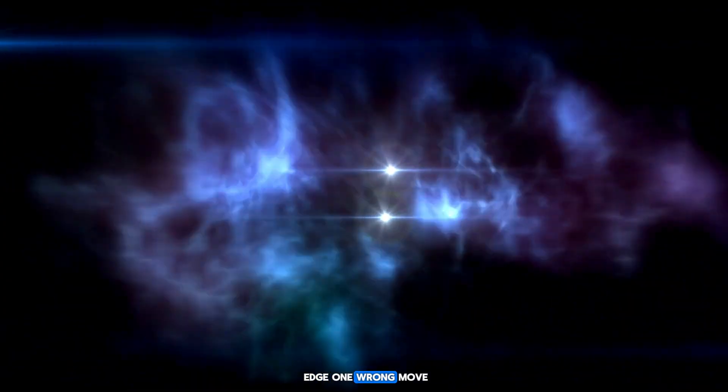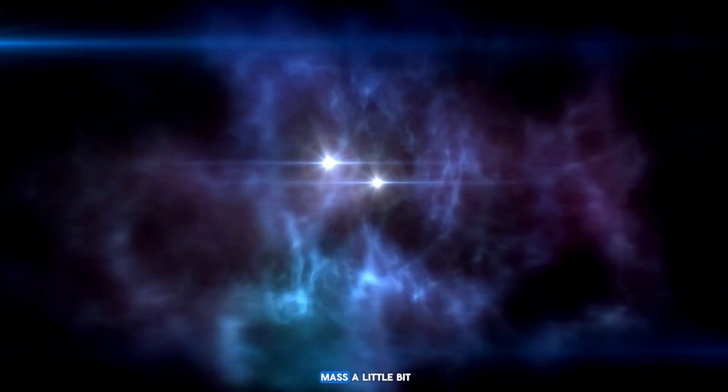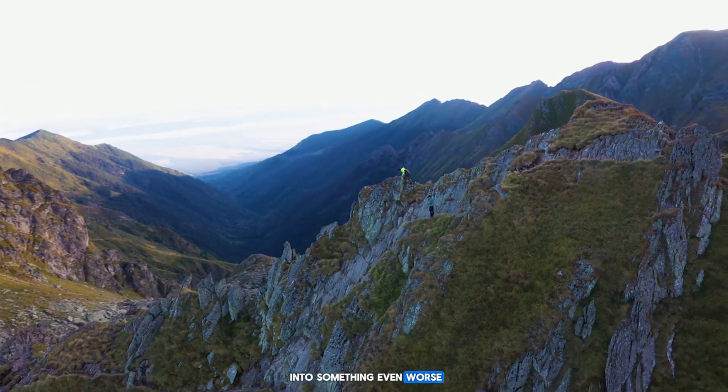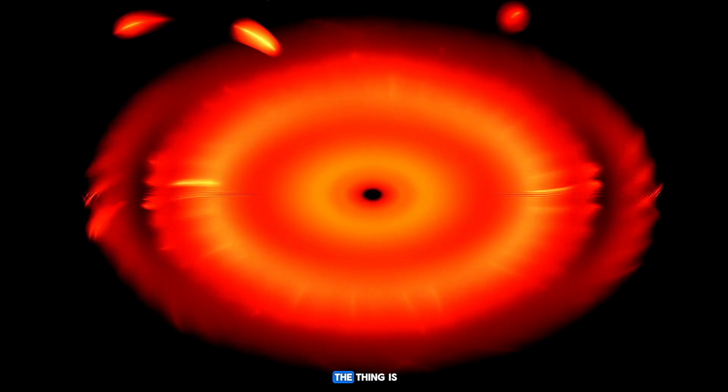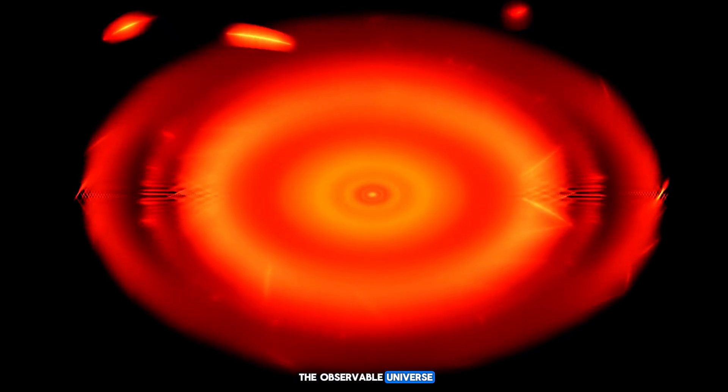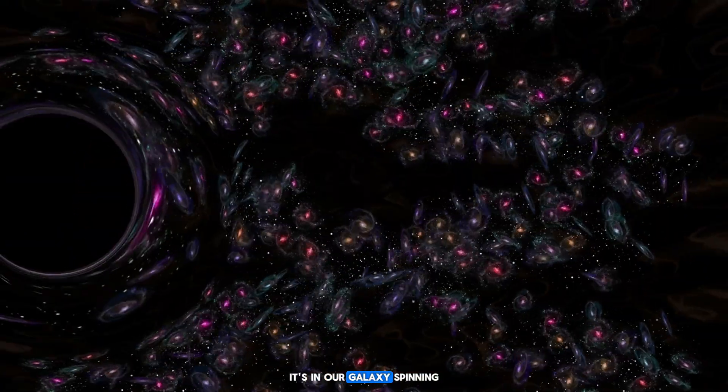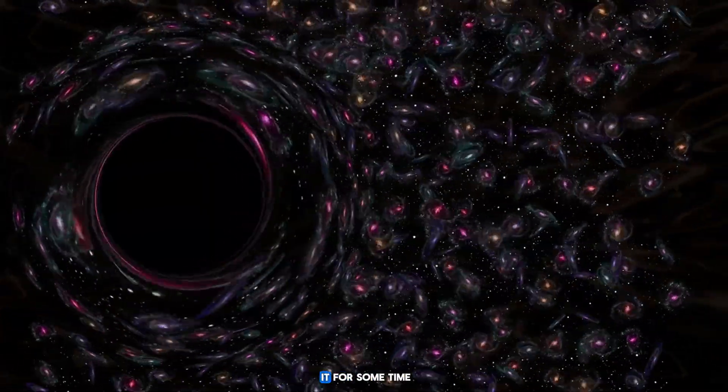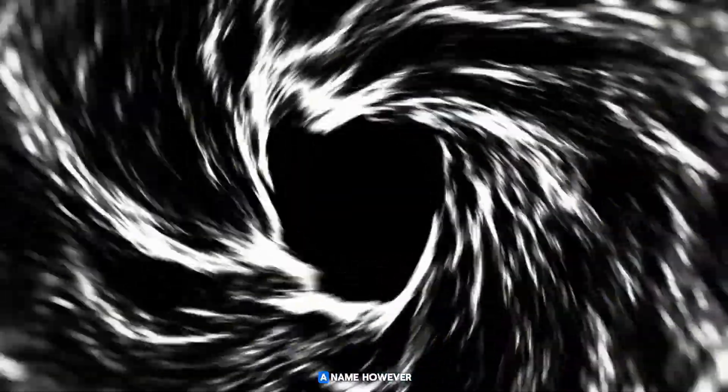But that's not even the scariest part. The real problem is that this object is unstable. It is on the edge—one wrong move, a little bit of mass, a little bit of pressure, and it will collapse into something even worse: a black hole. And the thing is, it's not some distant object at the edge of the observable universe. It's in our galaxy, spinning, feeding, and growing.